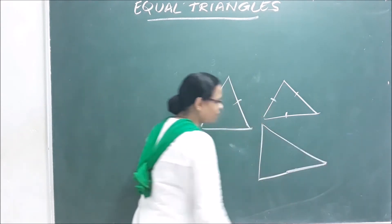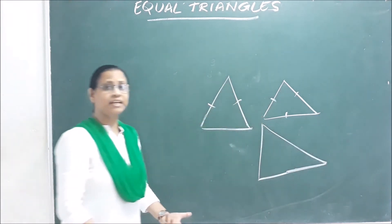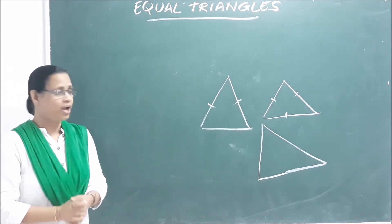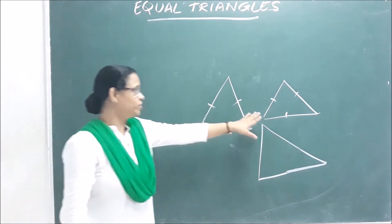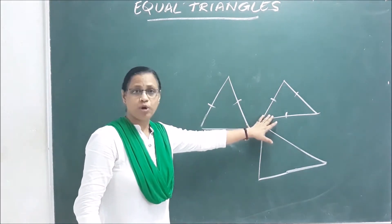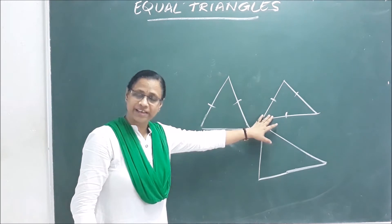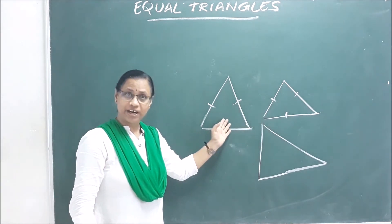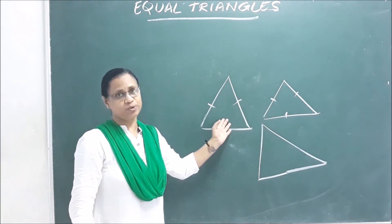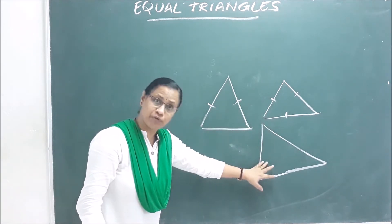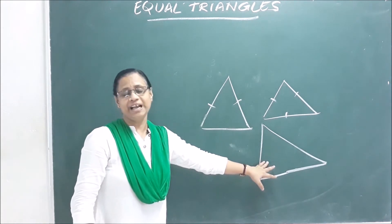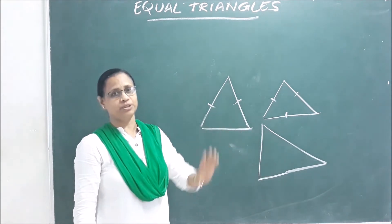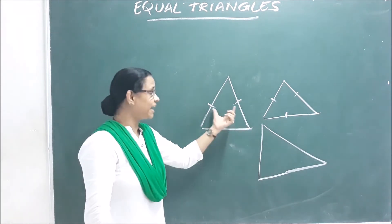What do we call the triangle where all three sides are different? It is called the scalene triangle. The three sides are equal for the equilateral triangle, two sides are equal for the isosceles triangle, and three sides are different for the scalene triangle. That is the side classification.